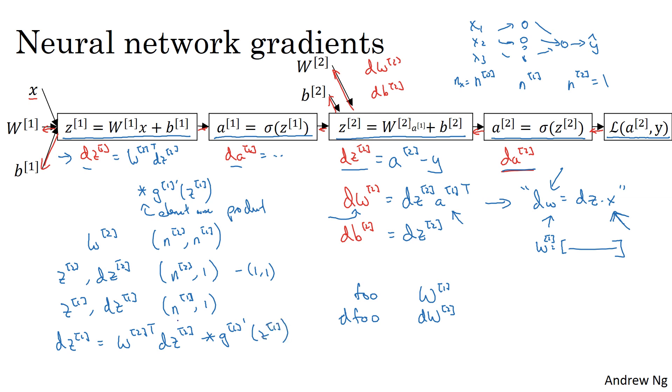Matching the dimensions from above, this is going to be n1 by one, equal to w2 transpose. We transpose of this, so this is going to be n1 by n2 dimensional. Dz2 is going to be n2 by one dimensional. And then this is the same dimension as z1, so this is also n1 by one dimensional, an element-wise product.